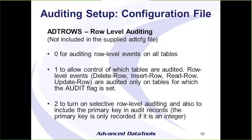The item not included in the configuration file is ADT_ROWS, which relates to row-level auditing. With zero, all events — insert, update, delete — that you've set as an audit flag will be audited. Whereas if you set it to one or two, you can be more selective as to which tables are audited for events like deletes, inserts, updates, and even reads.